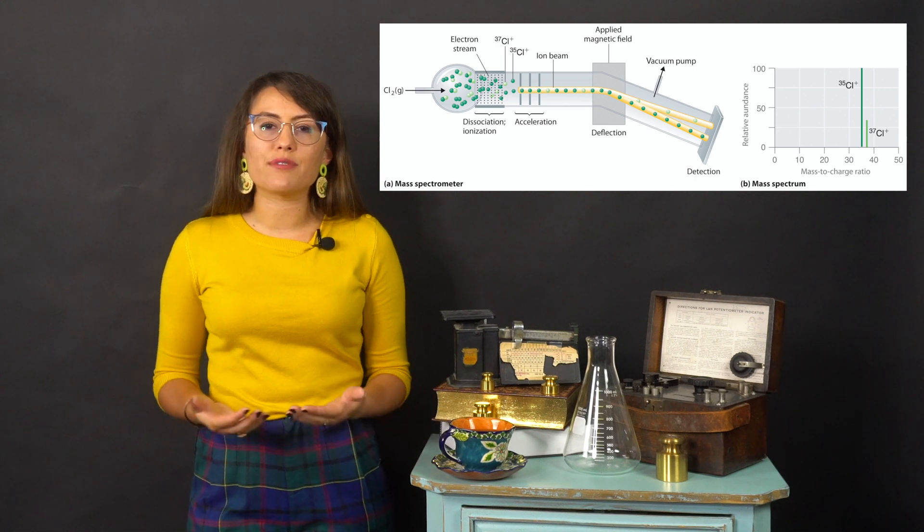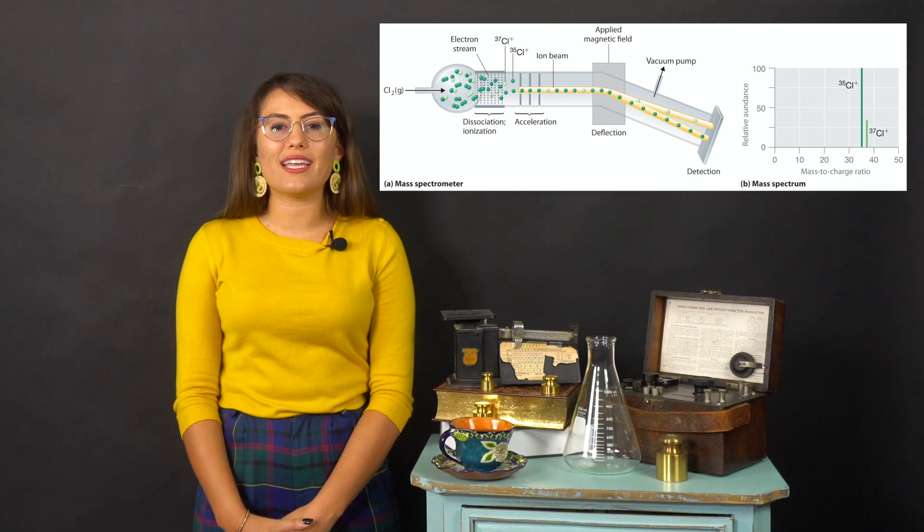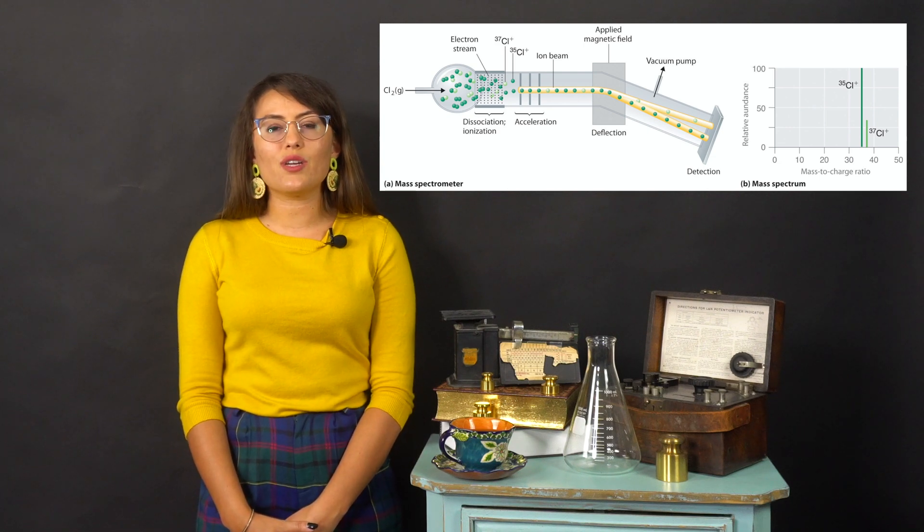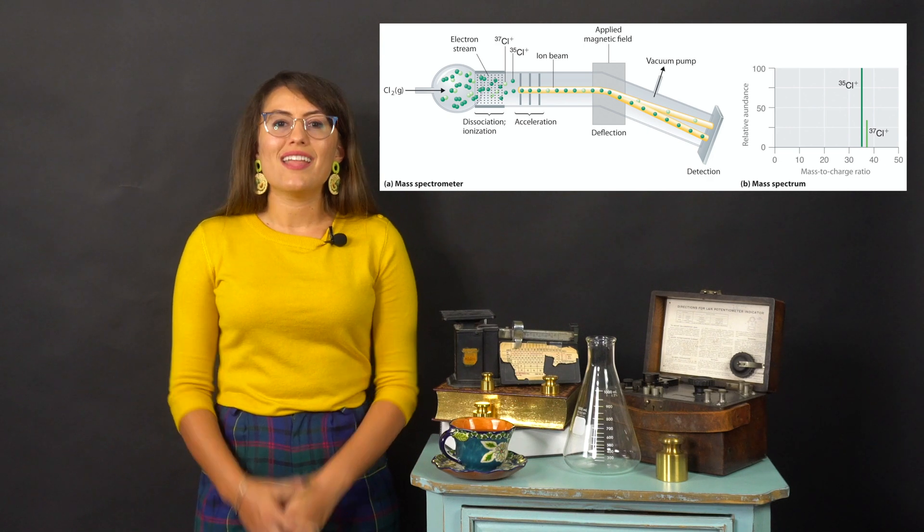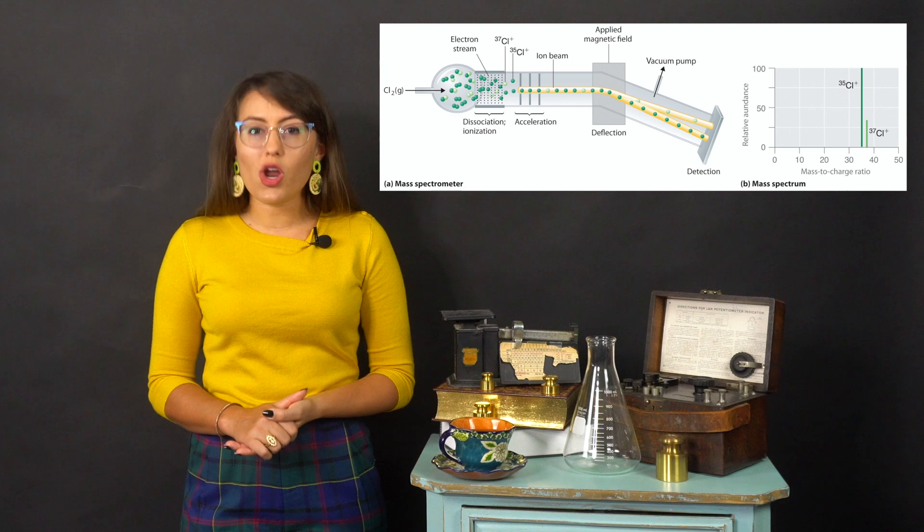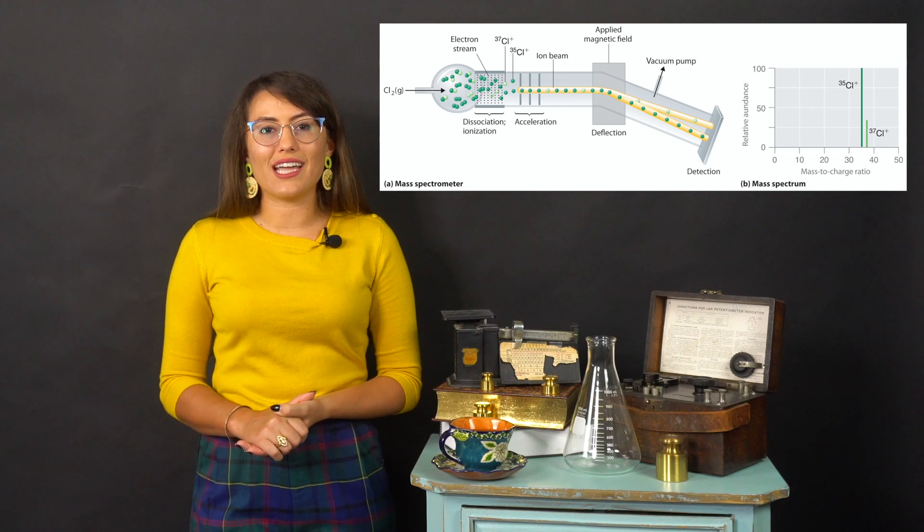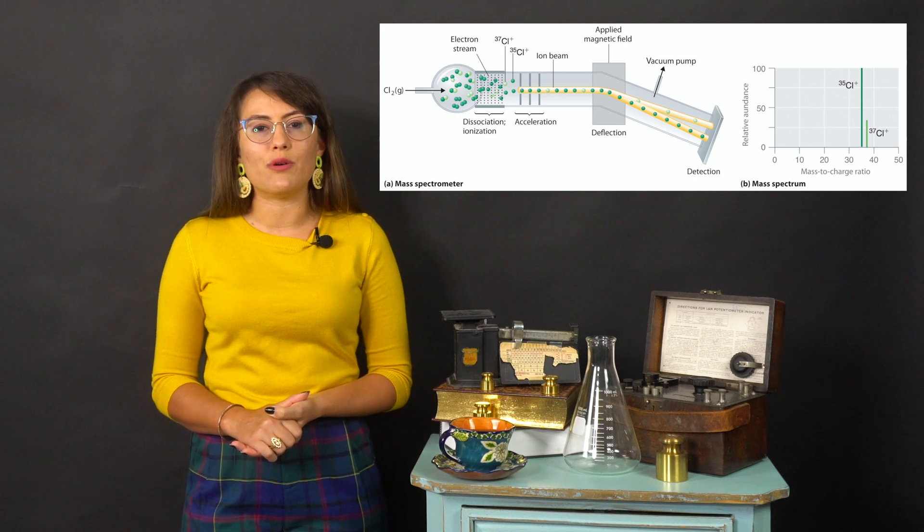We cannot calculate absolute atomic mass, so instead we can calculate relative masses by using a reference standard that has already been arbitrarily assigned a value. This is not an uncommon thing to do. Carbon-12 isotope has been assigned the arbitrary standard and is used for most calculations.